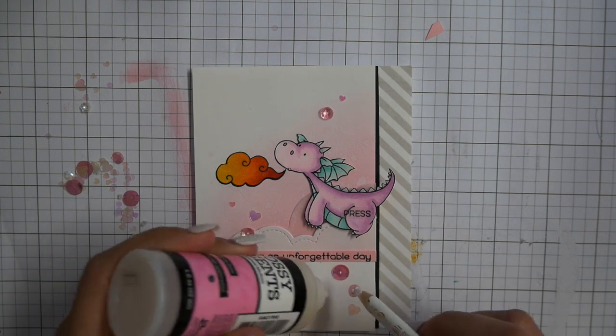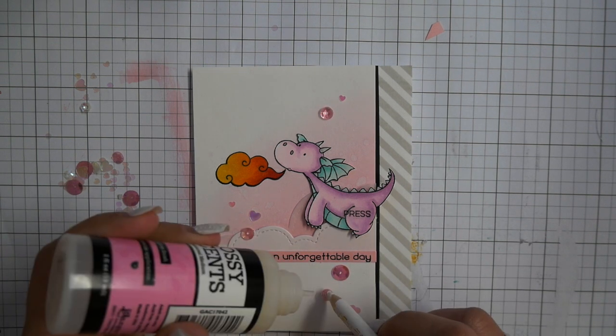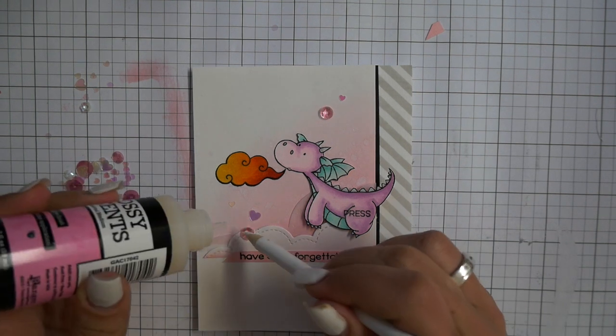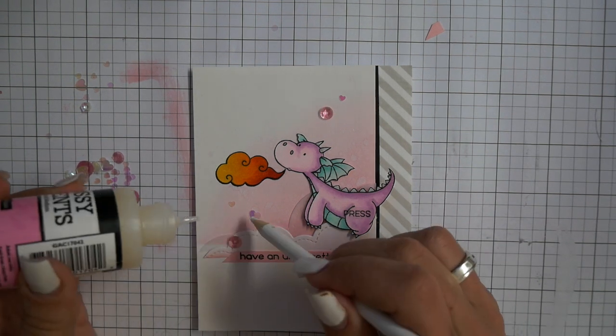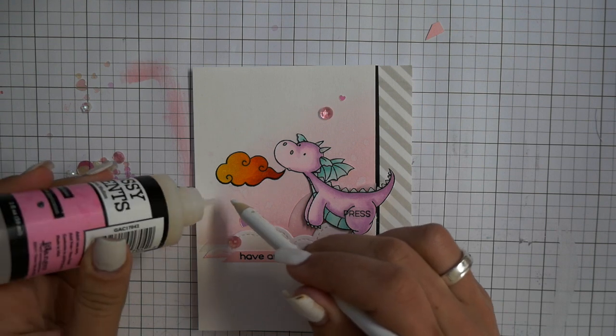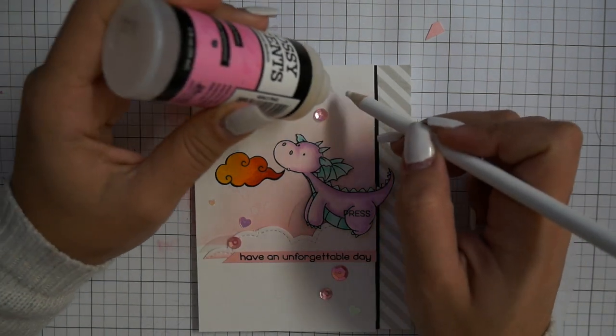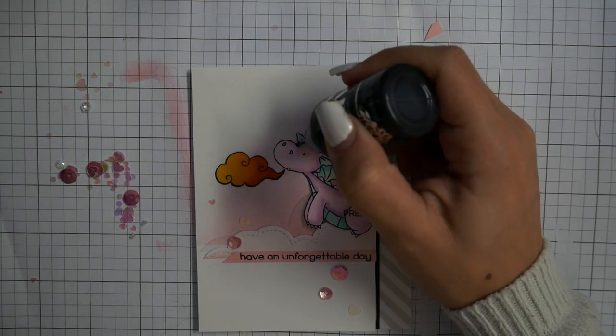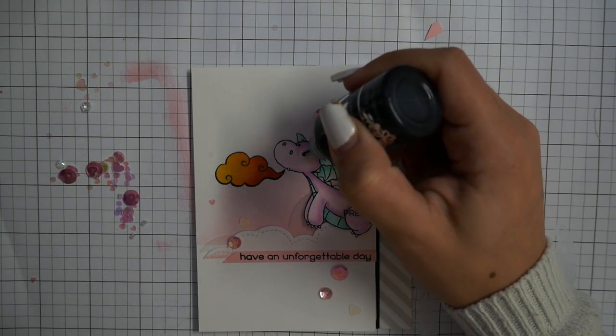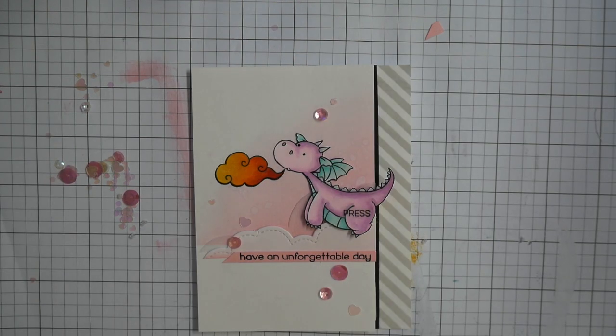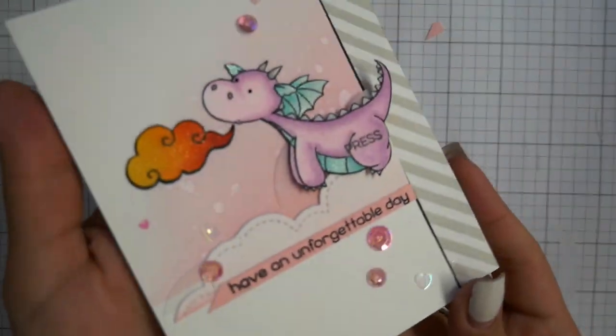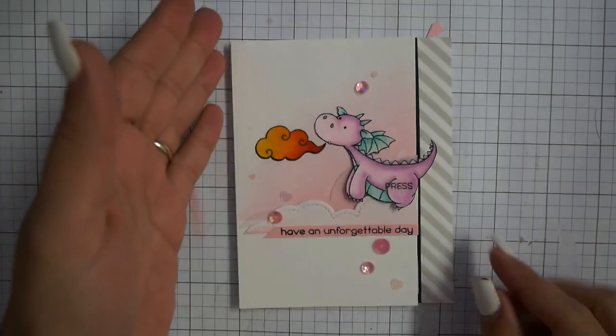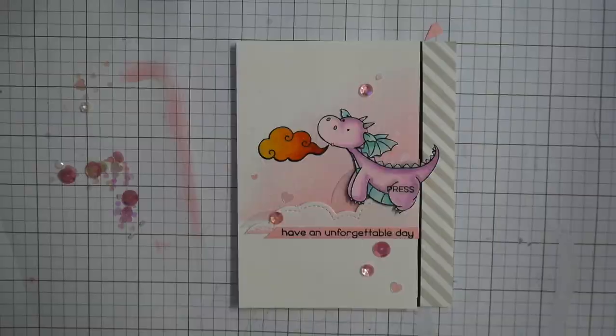I'm using here some sequins from Lucy's Little Things. This is called XOXO. I'm using here Glossy Accents to tape it down, and this pencil I'm using is a nail art jewel picker. It works perfectly for sequins and this is so cheap, you get about five pencils for two euros. Now my card is finished.